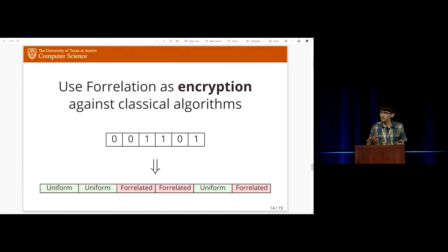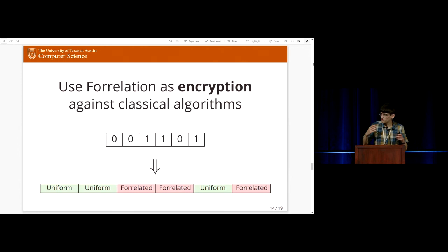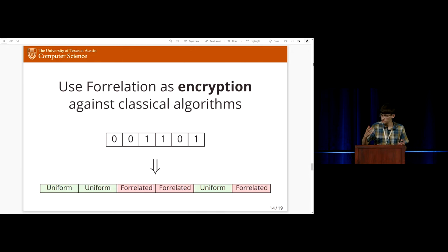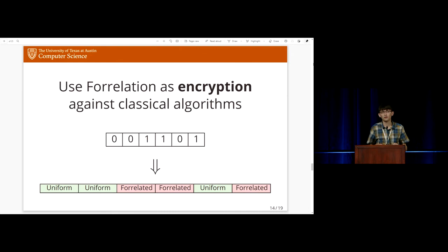We use Fourier relation conceptually as a kind of encryption against classical algorithms. The idea is you have some string of zeros and ones, and you turn these into a list of corresponding Fourier relation instances — a zero maps to a uniformly random instance, a one to a Fourier related instance. This makes the bits accessible to a quantum algorithm, which can solve the Fourier relation problem to distinguish them. But it makes this information inaccessible to classical or even PH algorithms, since by Raz and Tal, the Fourier related distribution is indistinguishable from uniform by PH algorithms. This is a key tool for putting large complexity classes inside BQP while keeping them separate from classical complexity classes.